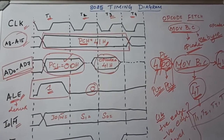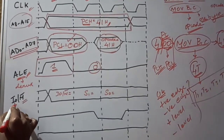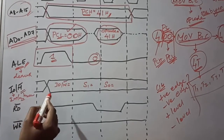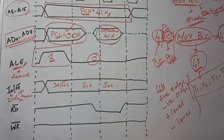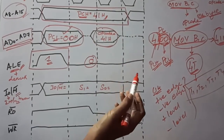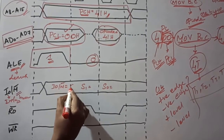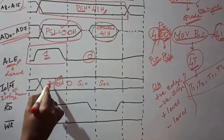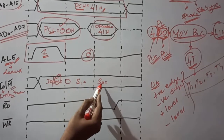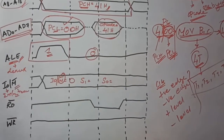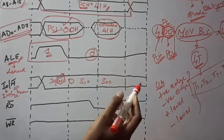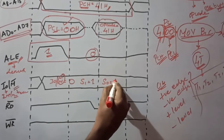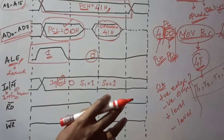The next signal is IO/M bar — it indicates whether data comes from an input/output device or memory. In this instruction, data is fetched from program memory, so IO/M bar equals 0, enabling memory and disabling I/O. S1 and S0 signals represent the microprocessor status. For opcode fetch, S1 equals 1 and S0 equals 1, indicating the processor is fetching opcode from program memory.